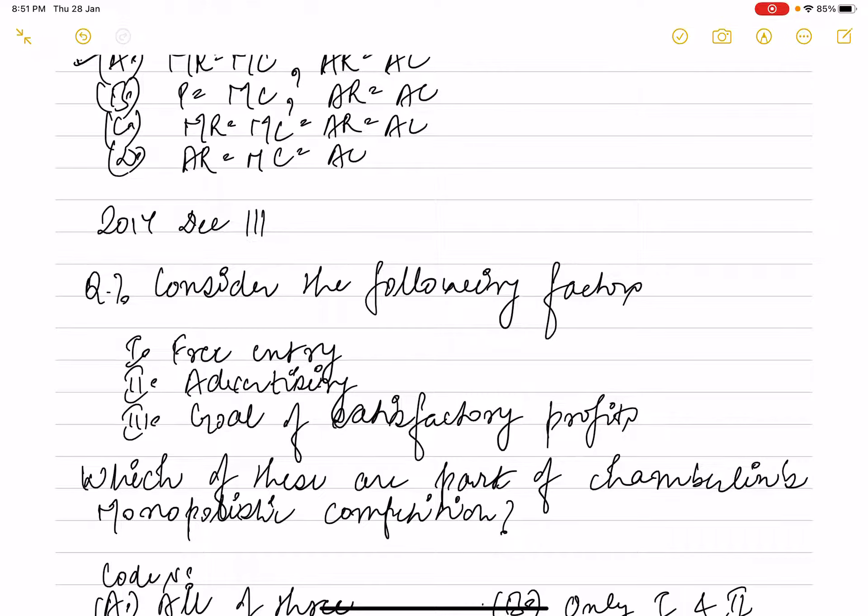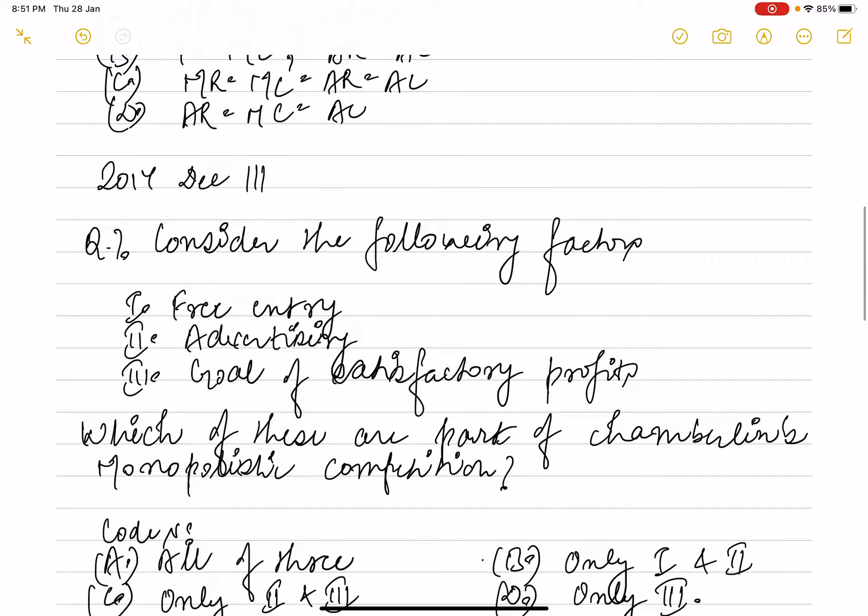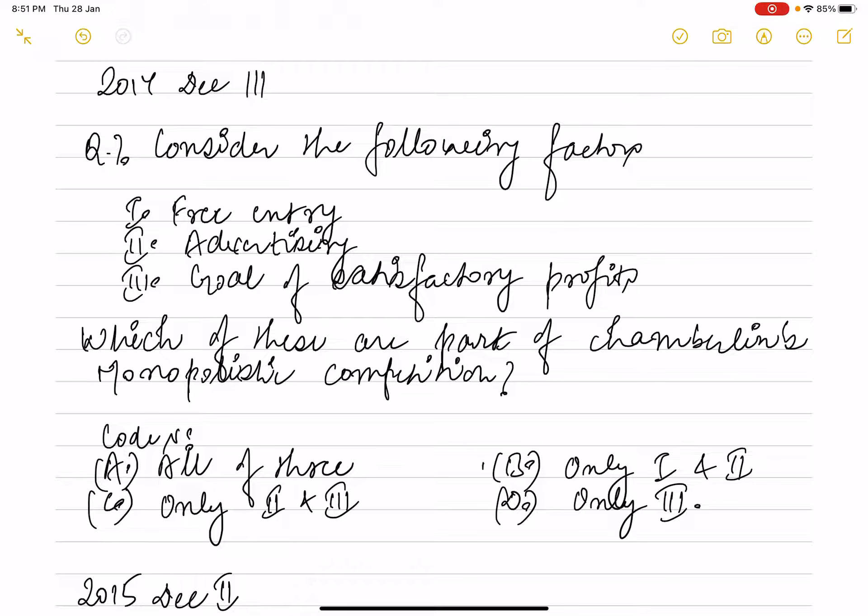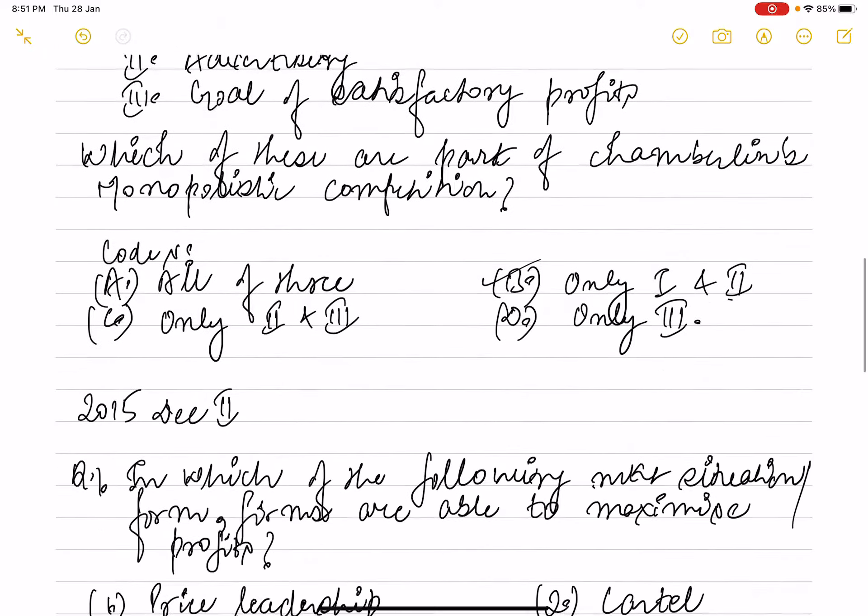Next question. This was asked in 2014 December paper three. The question is: consider the following factors in monopolistic competition. Free entry is correct, advertisement happens, that's correct. Third is goal of satisfying profit, this is not true. So accordingly option B is correct which says only one and two are correct.